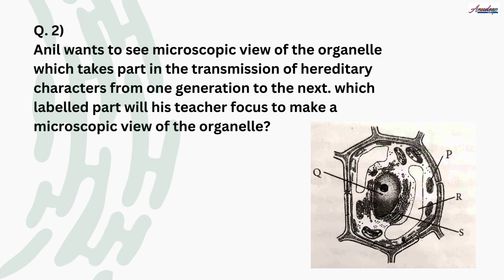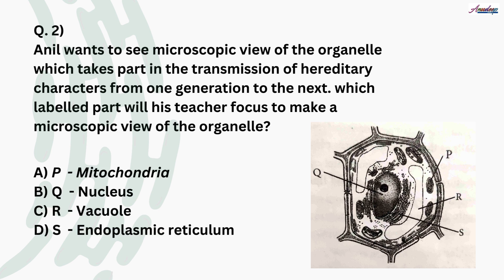Question number two: Anil wants to see the microscopic view of the organelle which takes part in the transmission of hereditary characters from one generation to the next. Which labelled part will his teacher focus on? From the figure, P is mitochondria, Q is nucleus, R is vacuole, and S is endoplasmic reticulum. The transmission of hereditary characters is done through genes present in chromosomes, and these chromosomes are present in the nucleus. So the teacher will focus on the nucleus — the answer is option B, Q.